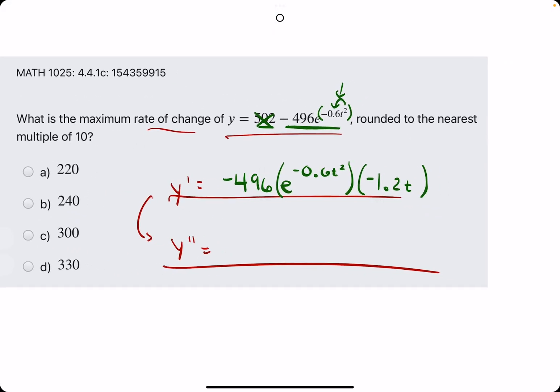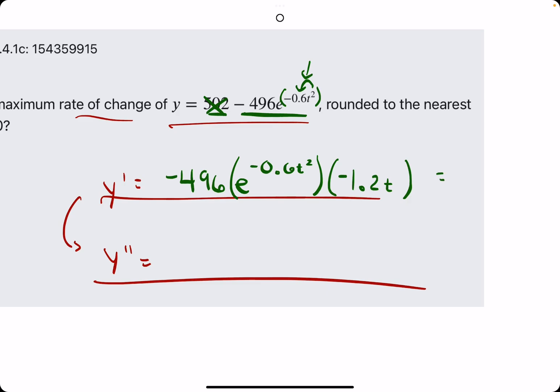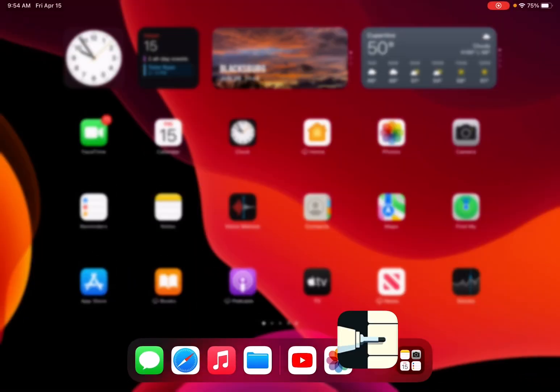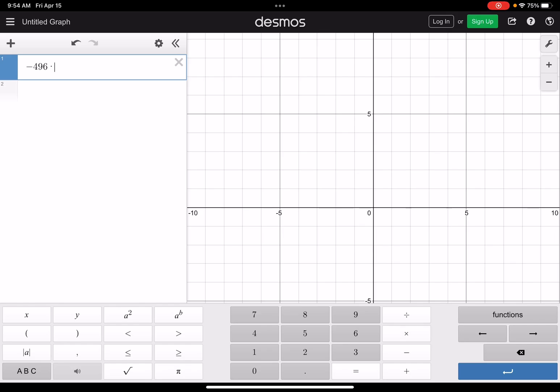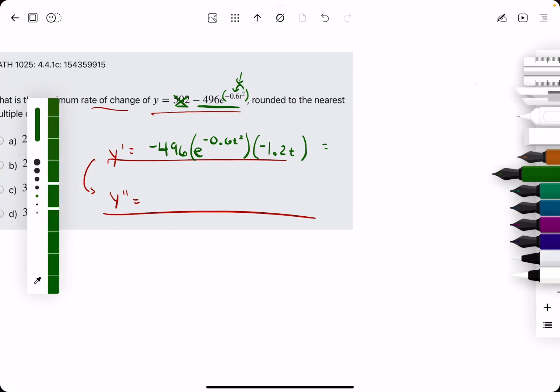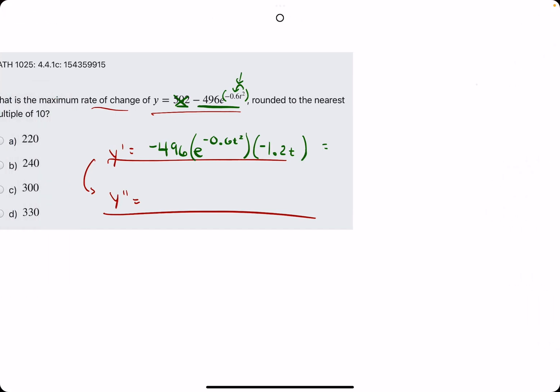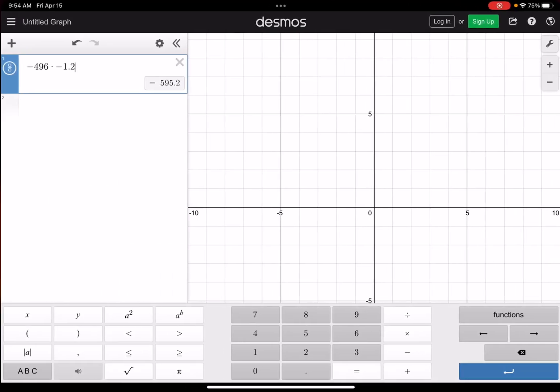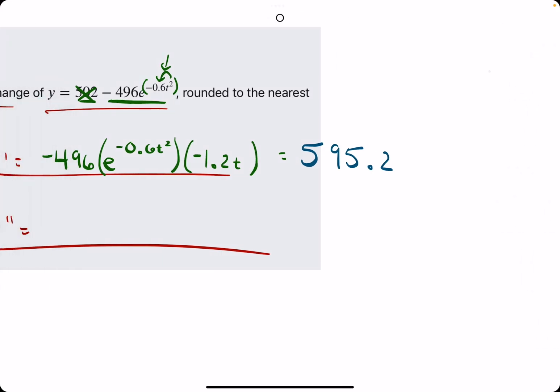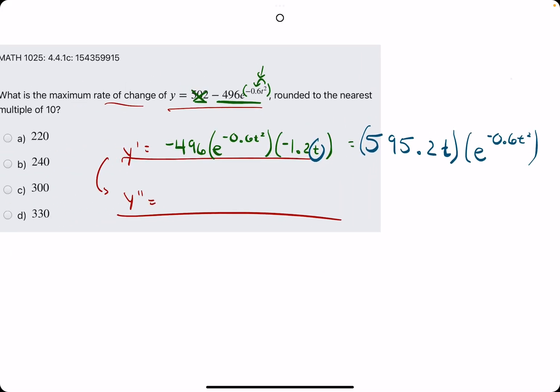So, all together, we have this, and it might help to go ahead and multiply the negative 496 and the negative 1.2. Negative 496 times negative 1.2 gives us 595.2. So, a positive 595.2. Let me make sure I have that right. Yep. And then, I'll go ahead and bring this t that's on the back end. I'll tack it up front, and then we'll leave the e term in the back here. All right. So, this is y prime.